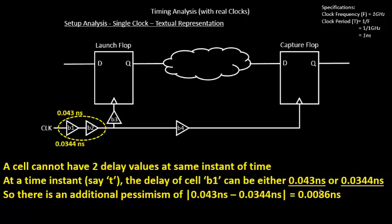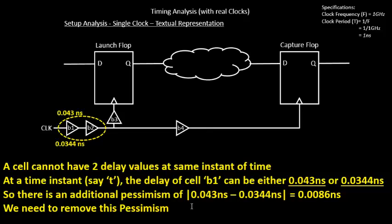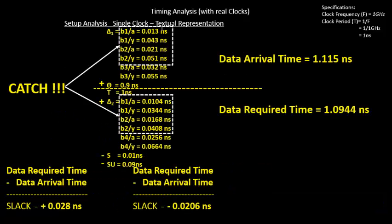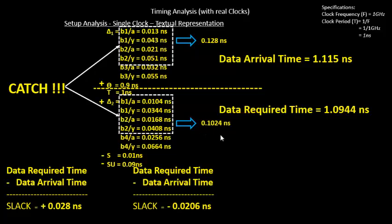Now we need to calculate the complete amount of pessimism added to the common clock path. The delay of the common clock section in the arrival time path is 128 picoseconds (0.128 ns) — adding up each net delay and cell delay. Similarly, for the corresponding block in the required time path, the delay is 102.4 picoseconds (0.1024 ns).